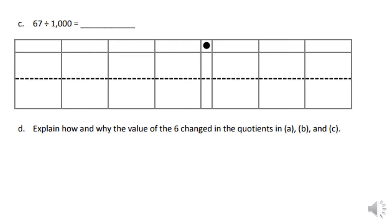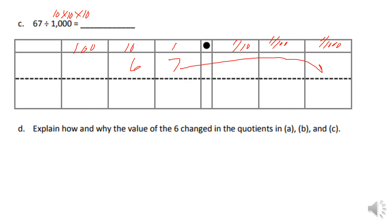For question C, I fill out the place value chart. We have 67 divided by 1000, and 1000 is 10 times 10 times 10 — that's three place values. Since we're dividing, the number gets smaller. The 7 moves three place values and the 6 moves three place values. There's a zero placeholder, and since it's a decimal fraction less than one, it's common to put a zero in the ones place.